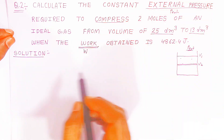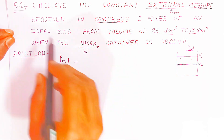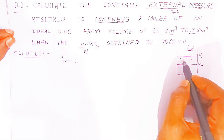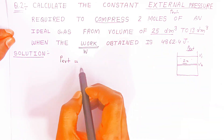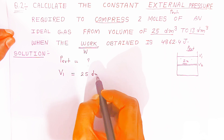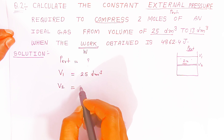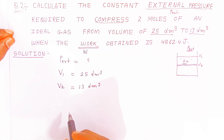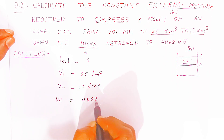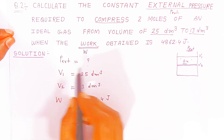Let's first write what is given and what we have to calculate. We have to calculate P external. The initial volume is 25 dm³, after compression it is reduced to 13 dm³, and work W is given as 4862.4 J. You have to calculate P external in bar — the pressure unit is bar.